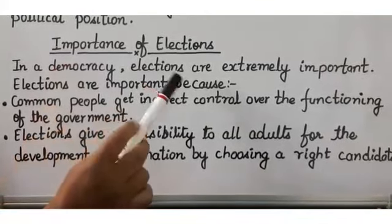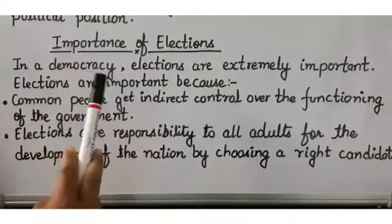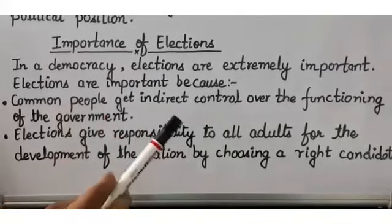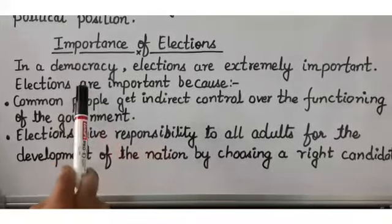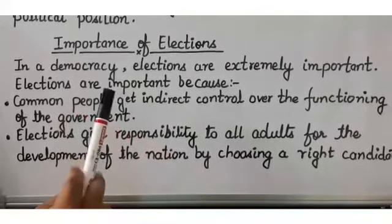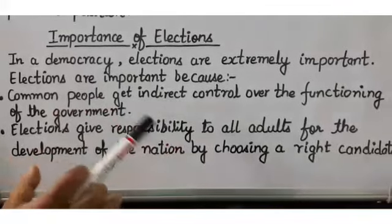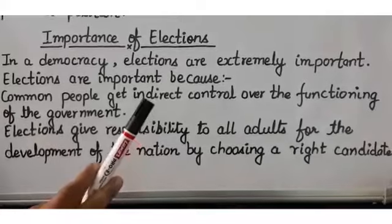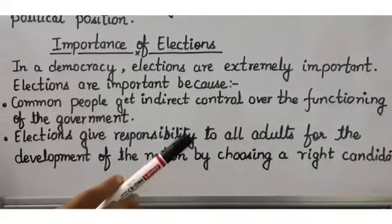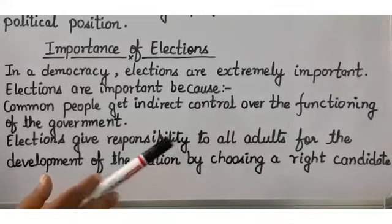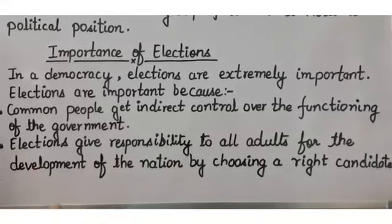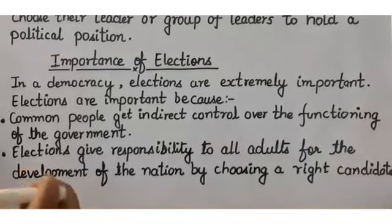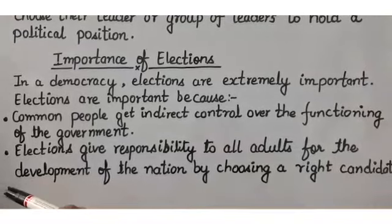In a democracy, elections are extremely important. People who are 18 years of age or above cast their vote with free will so that they can choose the representative of their choice. It is very important for all voters to cast their votes — to check on the leaders who are corrupt, meaning those who are dishonest, and to choose the leaders who promote the interest of the country.